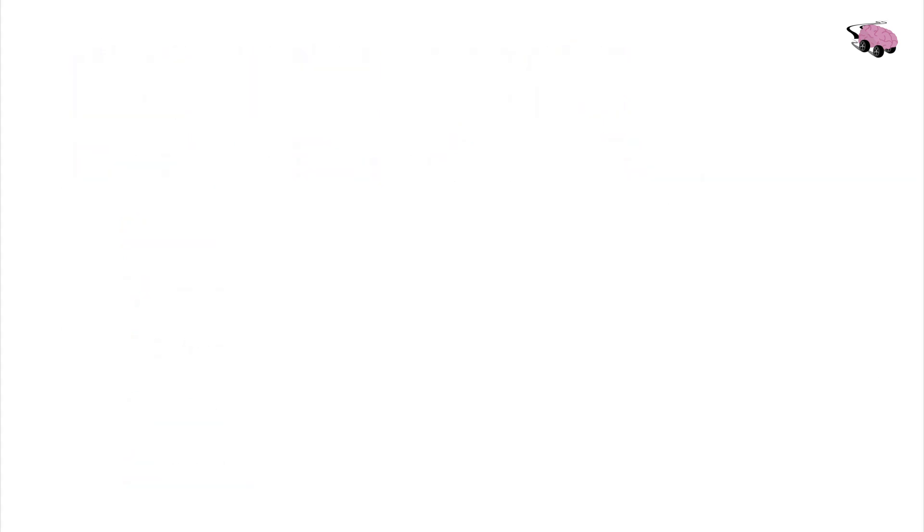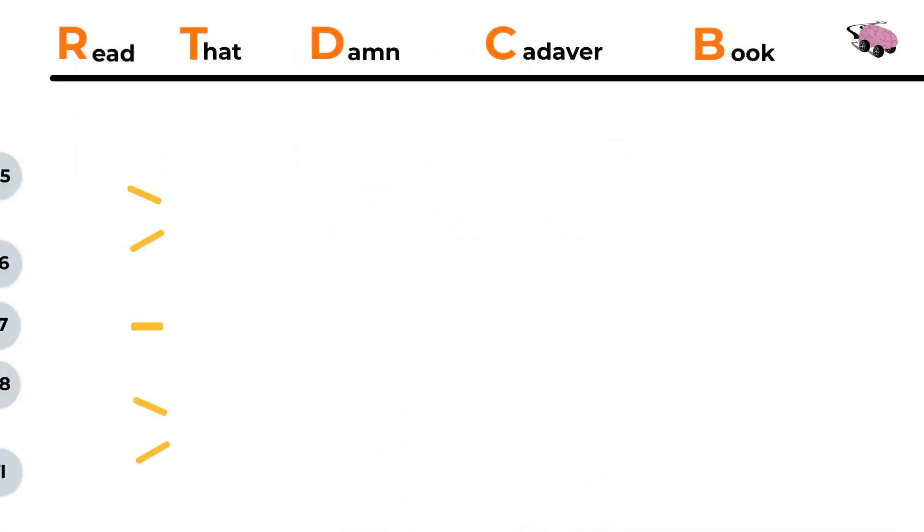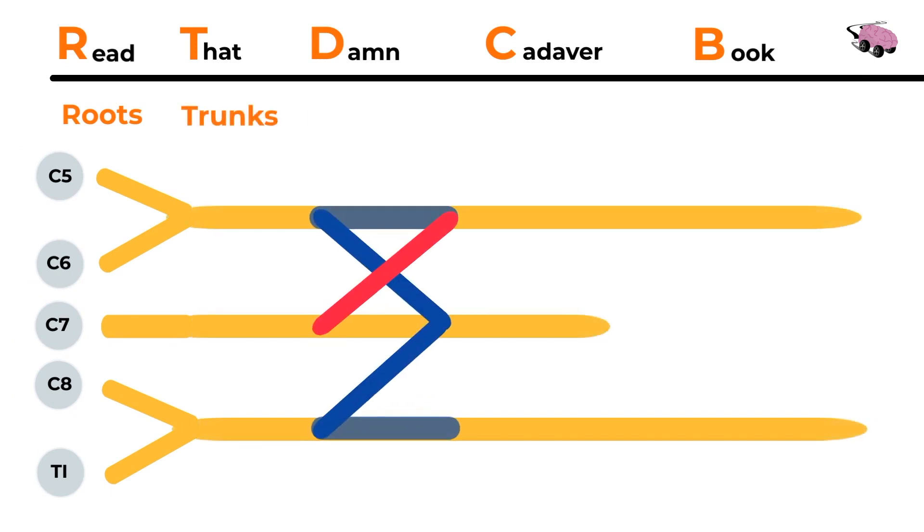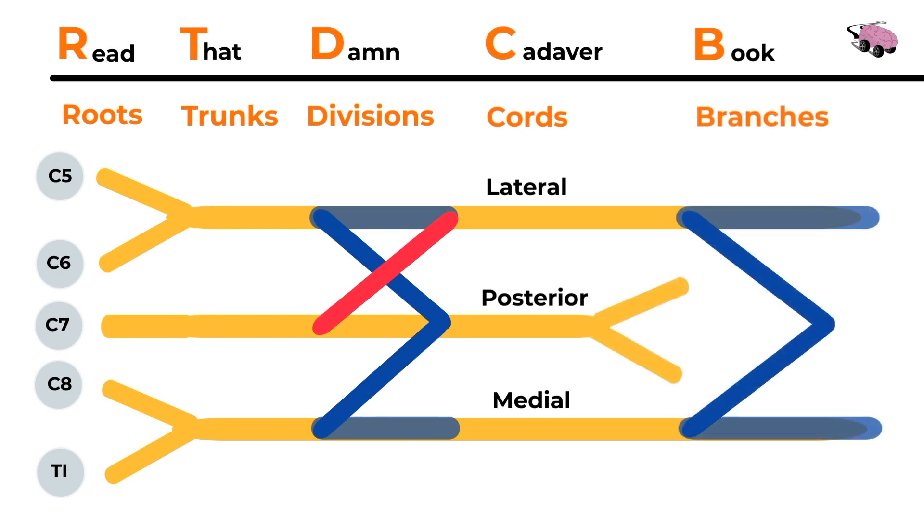Now keeping this in mind, let's label. Say it out loud as you label: read roots, that trunks, damn divisions, cadaver cords, and book branches.